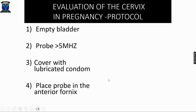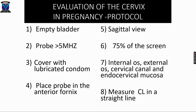The gold standard technique for evaluating the cervix is transvaginal ultrasound. Empty the bladder, use a probe with a frequency greater than 5 MHz, cover the probe with a probe cover (commonly a condom), and place the probe in the anterior fornix. Obtain a sagittal view where the cervix occupies 75% of the screen, then determine the internal os, cervical canal, and endocervix as demonstrated in the diagram. Measure the cervical length in a straight line.